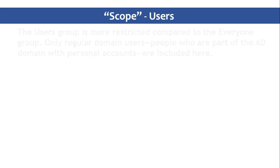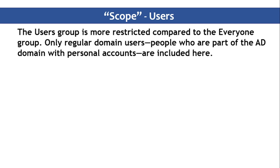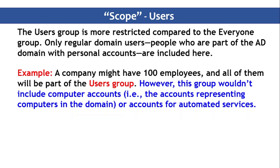The Users group is more restricted compared to the Everyone group — only regular domain users who are part of Active Directory with personal accounts are included. For example, a company might have 100 or 1000 employees, and all of them are part of the Users group by default. However, this group does not include computer accounts representing computers in the domain, or accounts for automated services. The members of the Users group are explicitly the user accounts created by administrators.